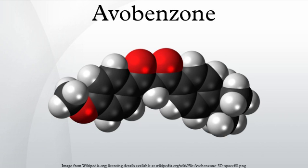Avobenzone also reacts with boron trifluoride to form a stable crystalline complex that is highly fluorescent under UV irradiation. The emission color of the crystals relies on the molecular packing of the boron-avobenzone complex. The photoluminescence may also be altered by mechanical force in the solid state, resulting in a phenomenon called mechanochromic luminescence. The altered emission color recovers itself slowly at room temperature or more swiftly at higher temperatures.